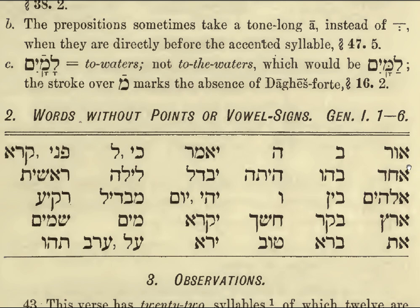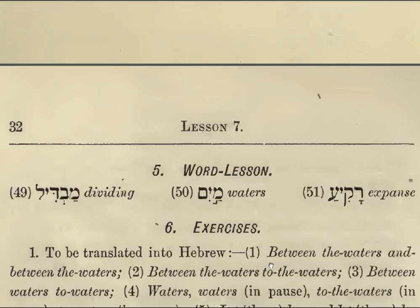Here we have a collection of words without vowel points which you should look over. Vocabulary: MABDIL — dividing. RAKKIANG — expanse, barrier, division. Remember, the PATAH FURTIVE here is not a full vowel — it's a hidden vowel — so we only have two proper vowels and therefore only two syllables: RAH KIANG.